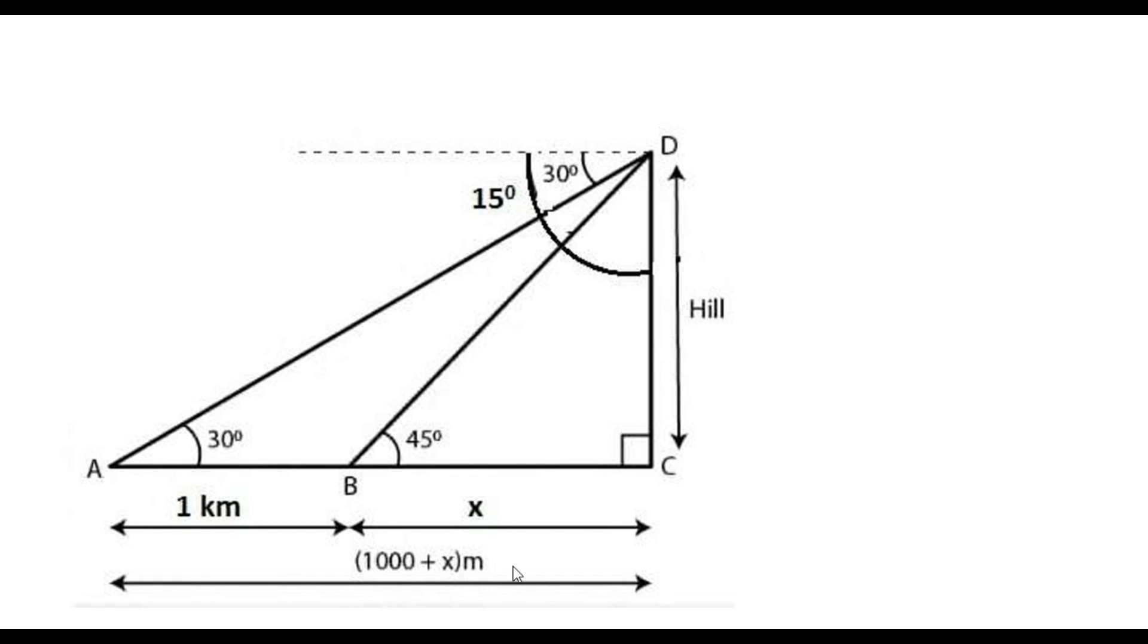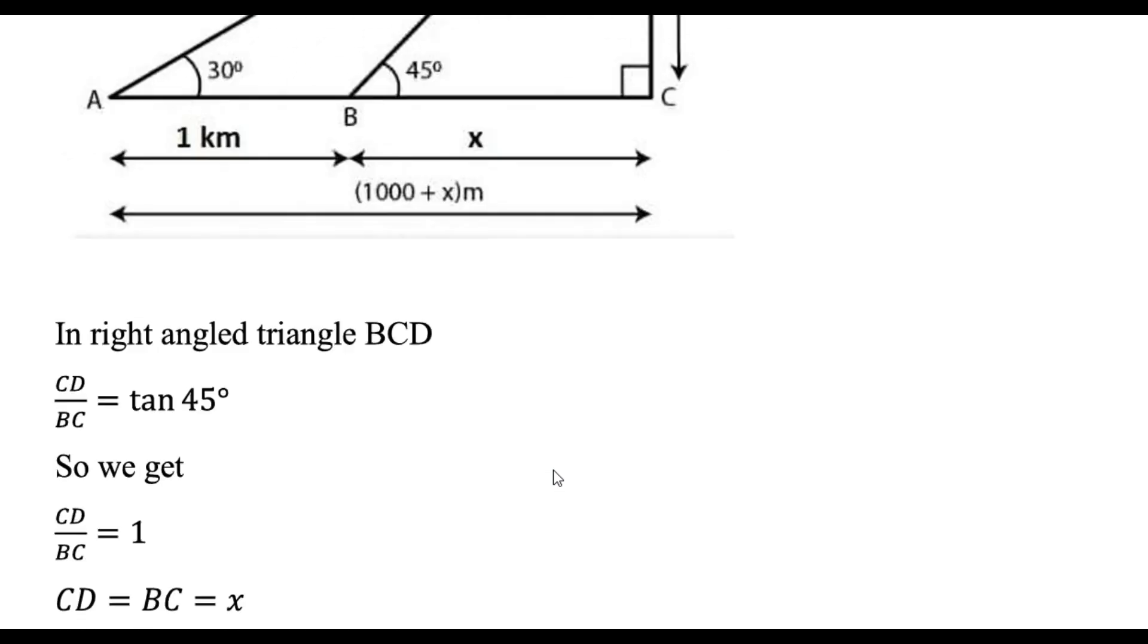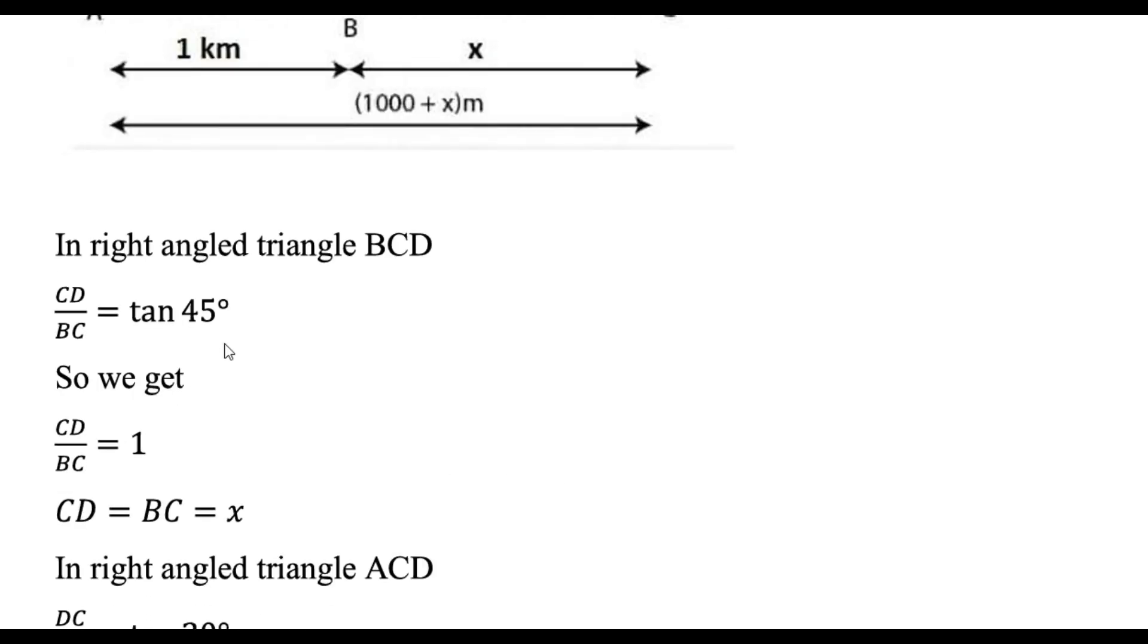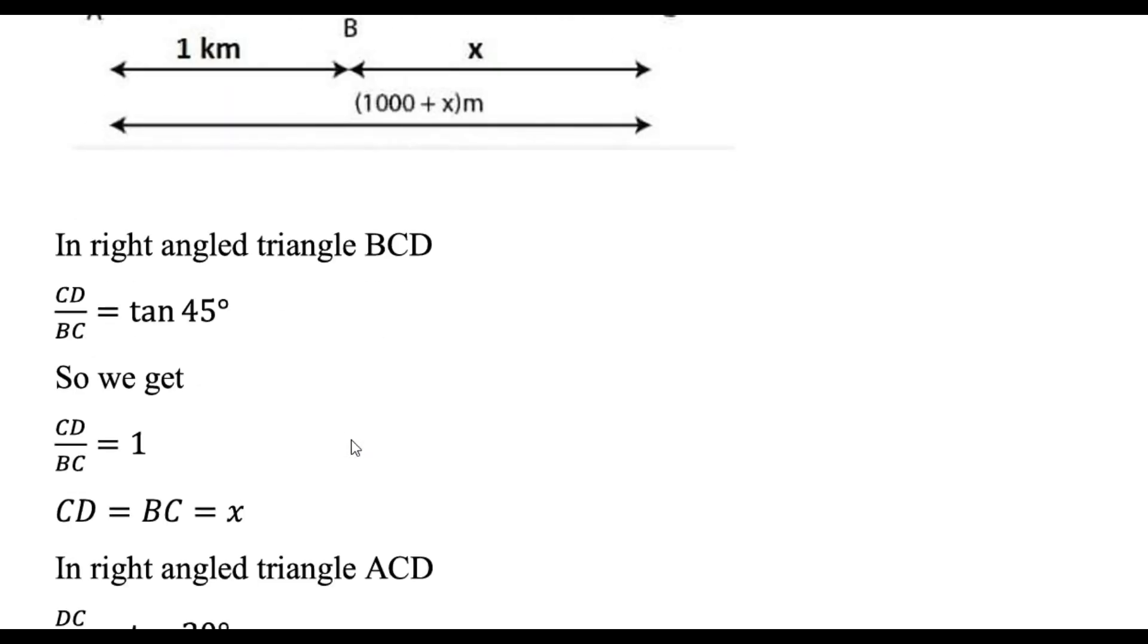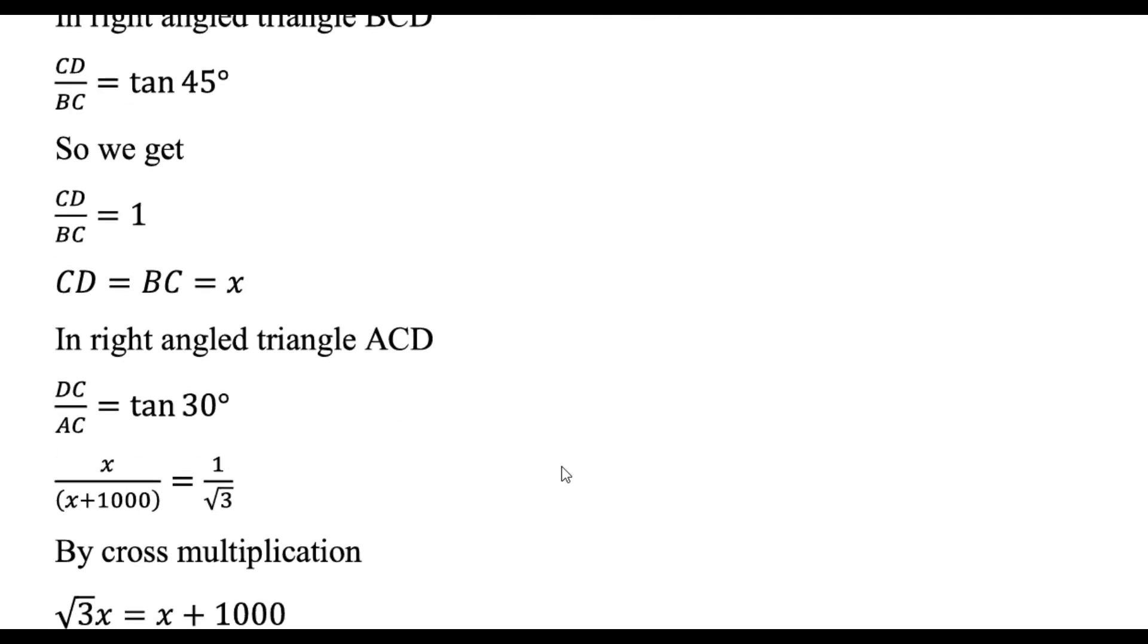Right, now put the formula. Tan 45 is equal to CD by BC. So as per the picture, BC is equal to DC, so it should be 1. So CD is equal to BC is equal to x.